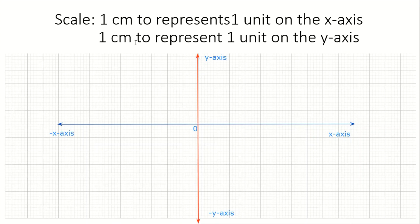Now I can think about the scale. On the x-axis they said I must use one centimeter to represent one unit. What you are going to do is take your ruler, place it where the x and y-axis intersect at the origin, and measure one centimeter from the origin. For every one centimeter that you measure, you are going to put a stroke on the x-axis to represent that one centimeter.